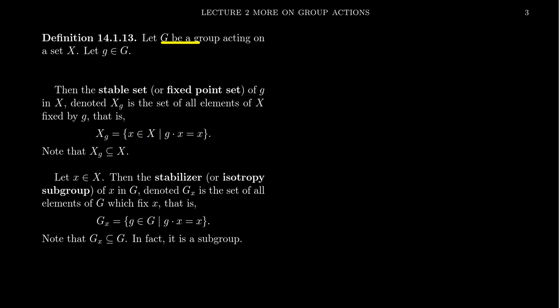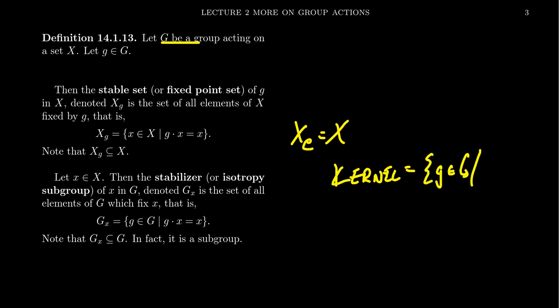In particular, if g is the identity and you take X sub e, this is all of X. By construction, the identity doesn't do anything to the set, so the stable set associated to the identity is always the whole set. The kernel of a group action is defined to be all of those elements whose stable set is everything — so if you have some group action, its kernel equals all of the elements g inside of G such that X sub g equals X. So this stable set says a lot about what the group actions do individually.